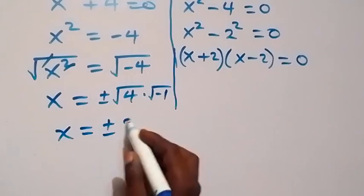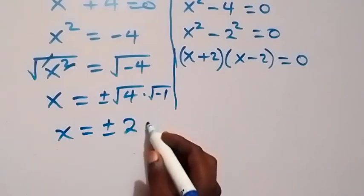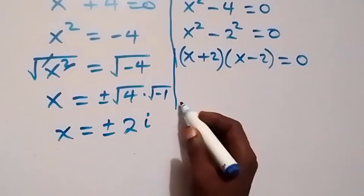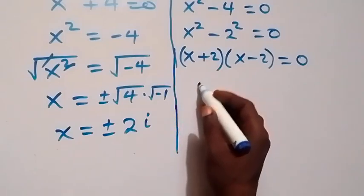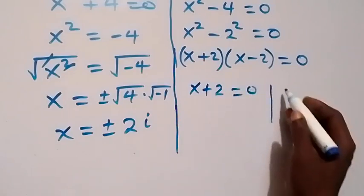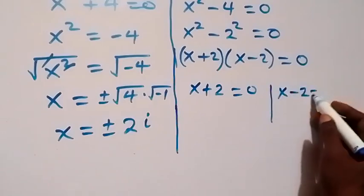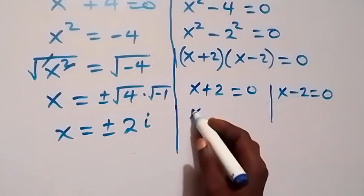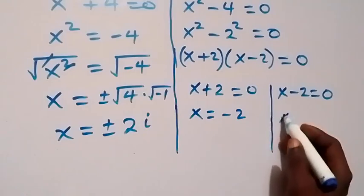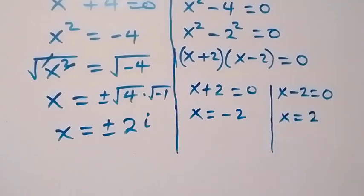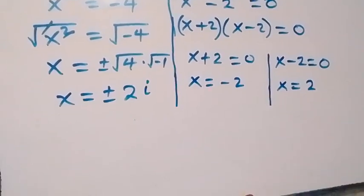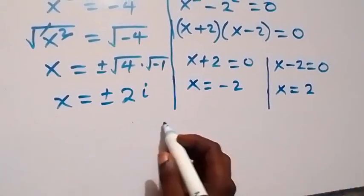This gives x equals plus or minus 2i. Then for x plus 2 equals zero or x minus 2 equals zero, we get x equals minus 2 and x equals positive 2 as solutions from this side.